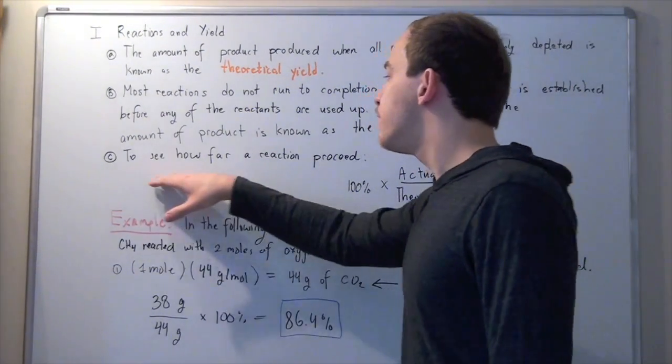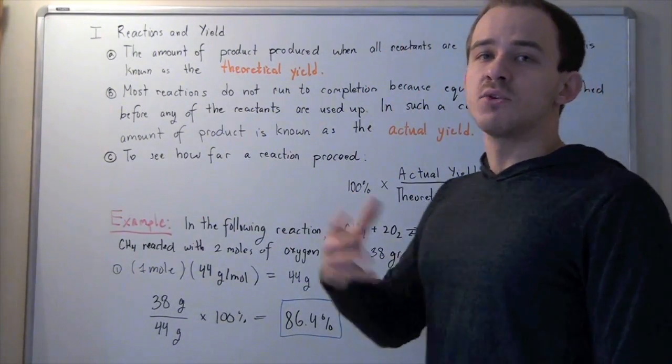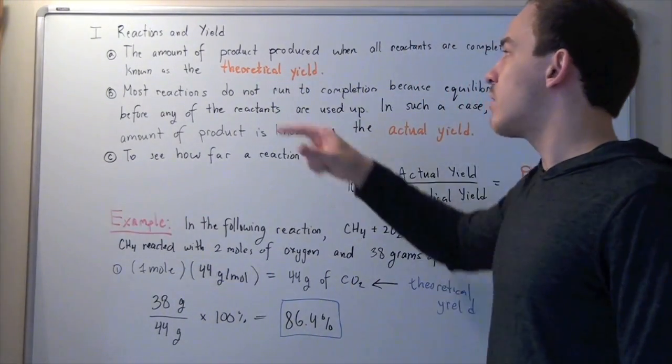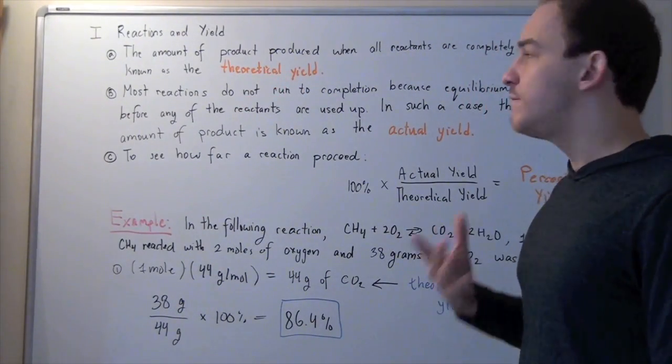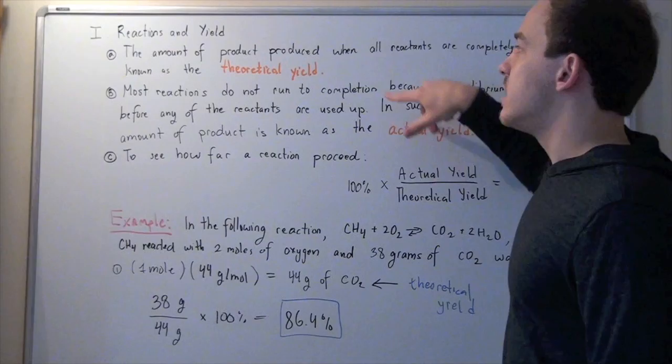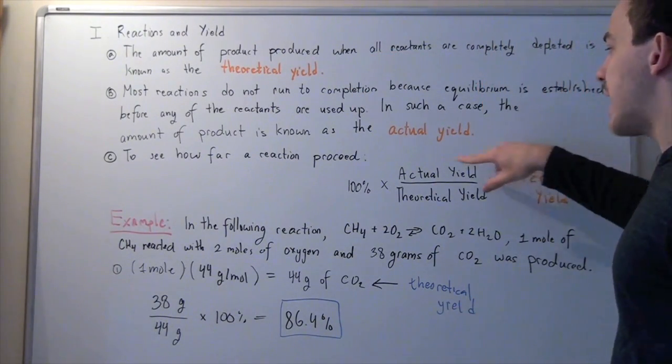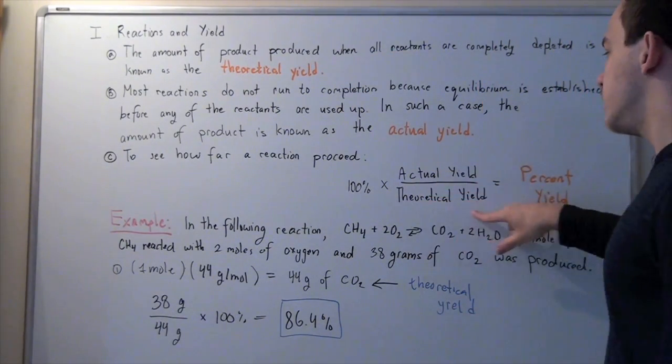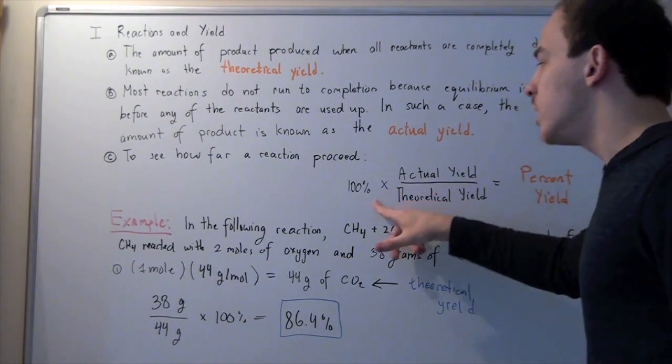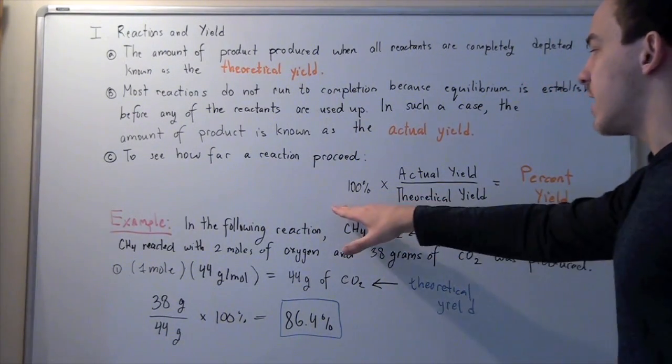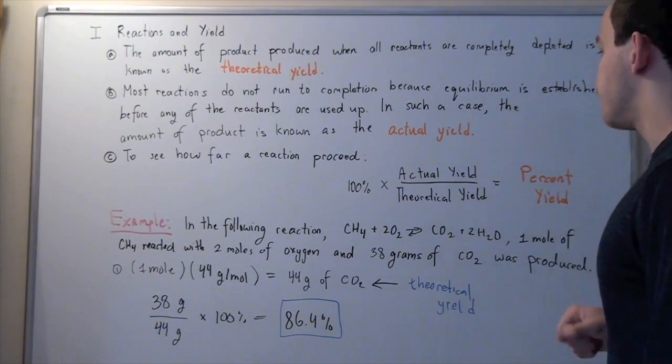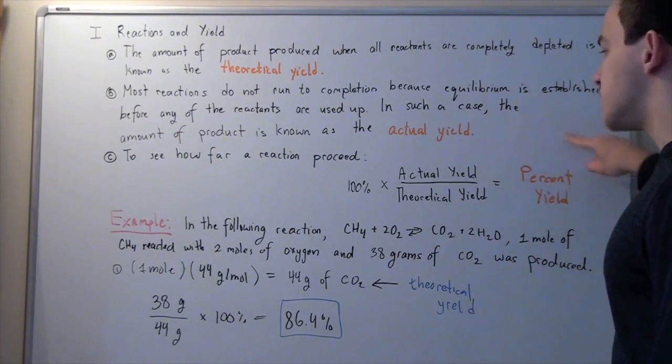Now, to see how far our reaction proceeded, in other words, how close it got to our theoretical yield, we simply find actual yield and theoretical yield. We divide the two, so actual yield divided by theoretical yield, multiply that by 100 to get our percent, because otherwise this is a fraction, and that will give you percent yield.